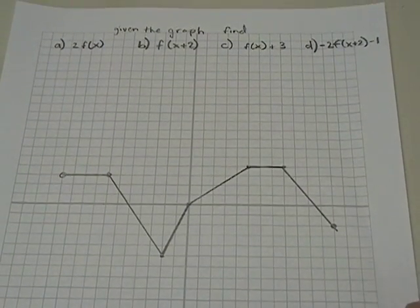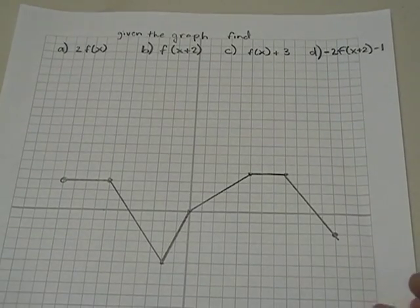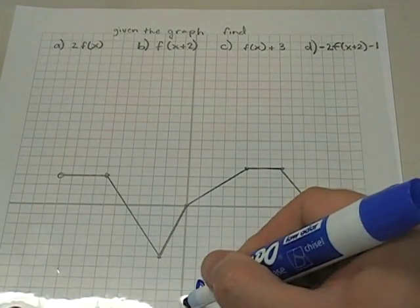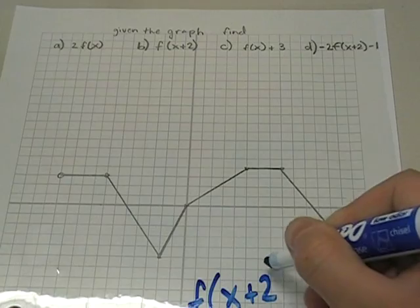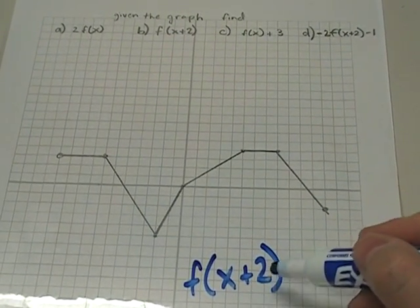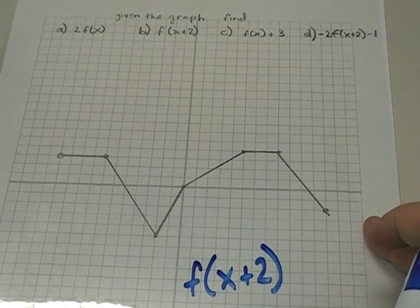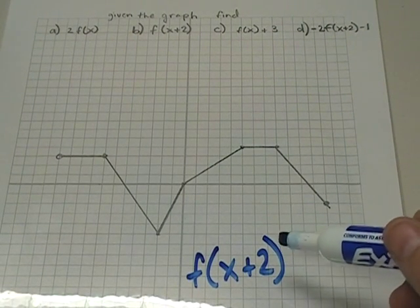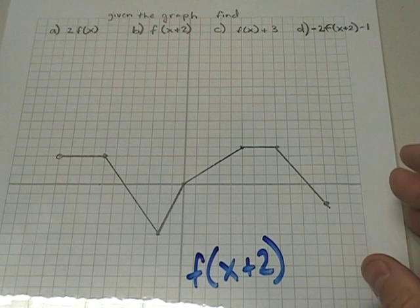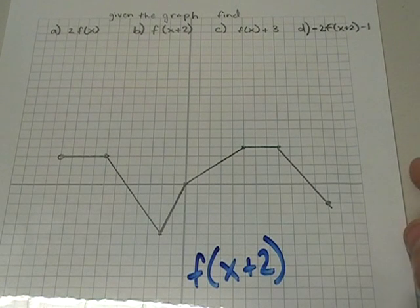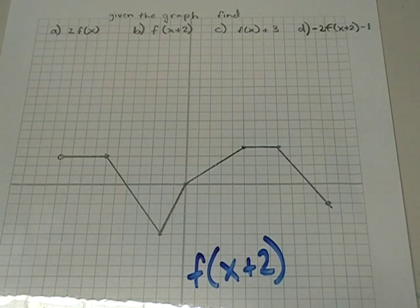Now, step number 2. We've been asked to find f(x+2). We are adding 2 to each x value, but the net effect of that is to shift the graph to the left. If you've not watched my video on translation of functions or covered translations in your class, I'm not going to go over that in great depth here.